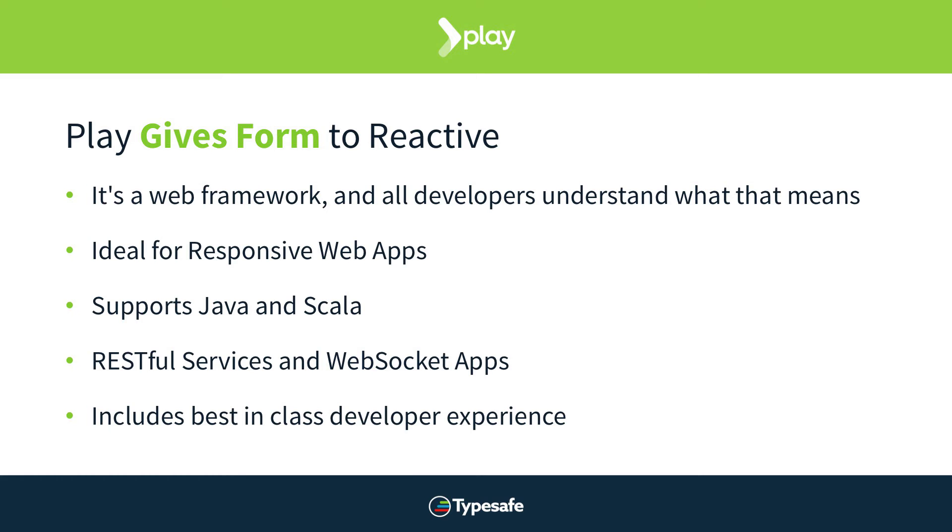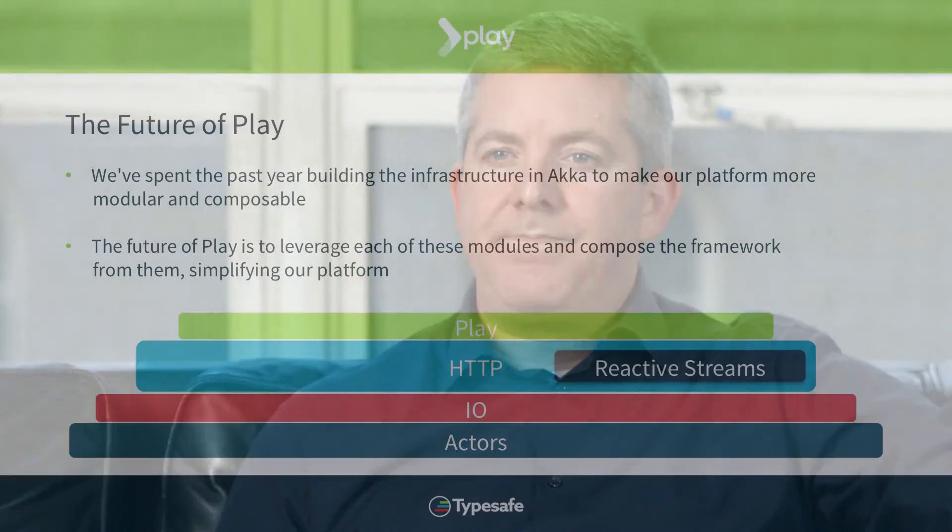Play includes a best-in-class developer experience, which for the JVM is new. Ruby on Rails became very popular because it focused on the developer being able to build something fast while also having fun. On the JVM, this has never been thought about before. Play was created specifically to make the developer experience unique and fun, so developers can get that quick interaction, build something, and find out whether or not it worked without having to wait a long time.